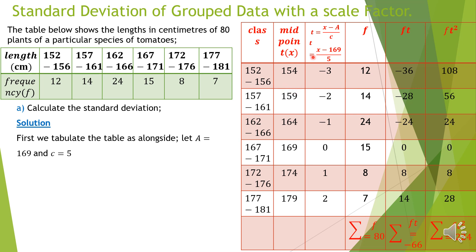Next: 159 minus 169 gives negative 10 divided by 5, giving negative 2. Then 164 minus 169 gives negative 5 divided by 5, giving negative 1. Then 169 minus 169 gives 0. Then 174 minus 169 gives 5 divided by 5, giving 1. Finally, 179 minus 169 gives 10 divided by 5, giving 2. This completes column 3, which we call the column of T.